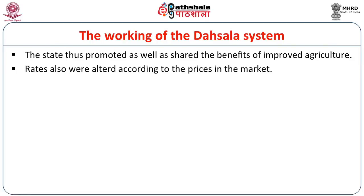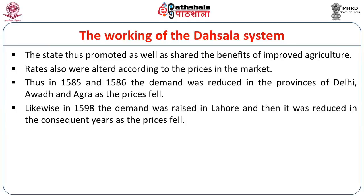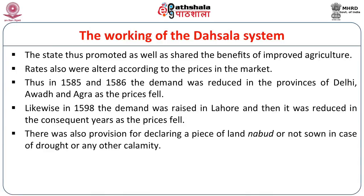Rates were also altered according to market prices. In 1585 and 1586, the demand was reduced in the provinces of Delhi and Awadh as prices of cash crops and food crops fell due to increased productivity. Likewise, in 1598, the demand was raised in Lahore and then reduced in consequent years depending on market prices. There was also provision for declaring a piece of land nabud or not sown. In case of drought or any other calamity, whenever this land would be brought under agricultural use again, it would carry the same revenue.